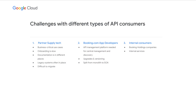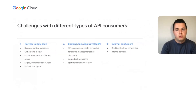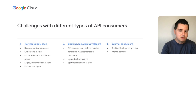Contrary to popular belief about API consumers, we don't only have iOS and Android apps — we also deal with different types of API consumers. The most important for us are business-critical use cases: partner supply tech and APIs. Their onboarding is usually slow because they've been our consumers for so long and often have legacy systems on their side, making it difficult to migrate from one API version to another before we introduce versioning.